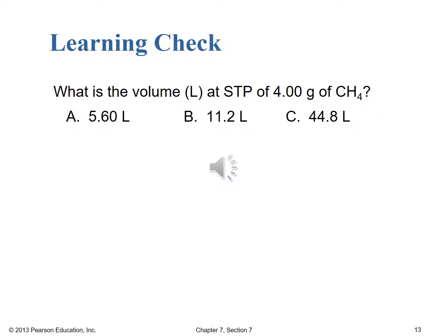Now that we've worked that example together, take a moment and try this learning check. The question is: what is the volume in liters at STP of 4.00 grams of methane, CH4? We made it a little trickier — hopefully you remember how to go from a gram mass of a compound to the moles of that compound. Once you tackle that slight increase in difficulty, converting moles of methane into a volume using the molar volume relationship should be no problem since we are at STP. Pause the video, do the work, make your selection, and start it back up when you're ready.